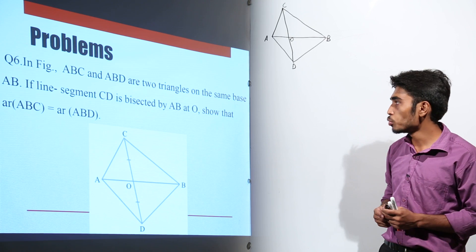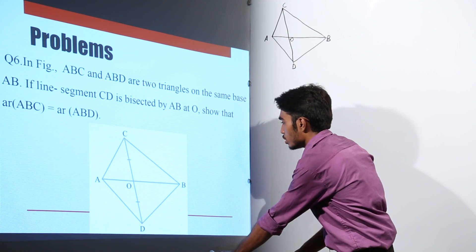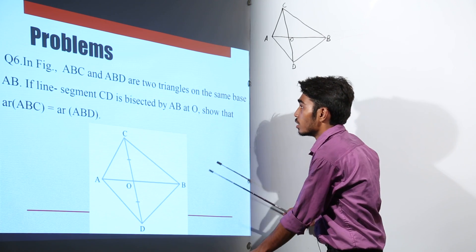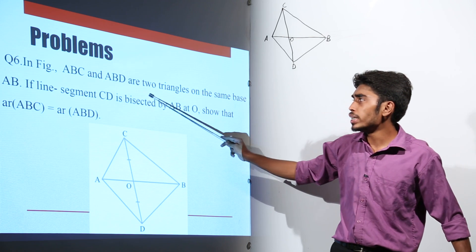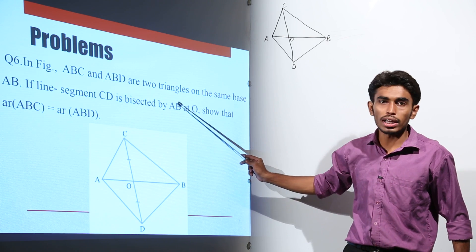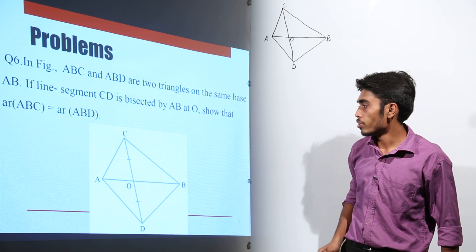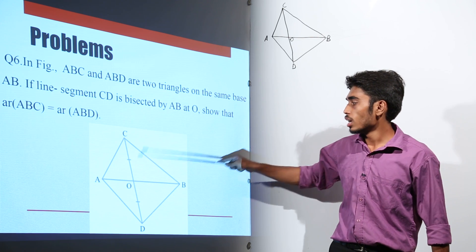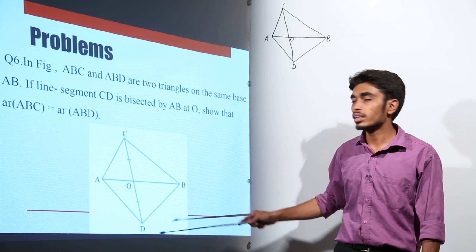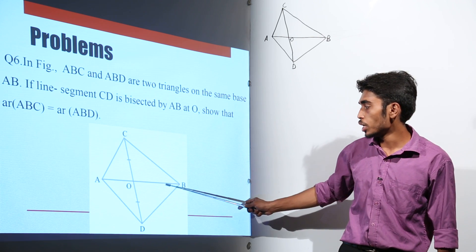Let us do the next question. In this question, ABC and ABD are two triangles on the same base AB.